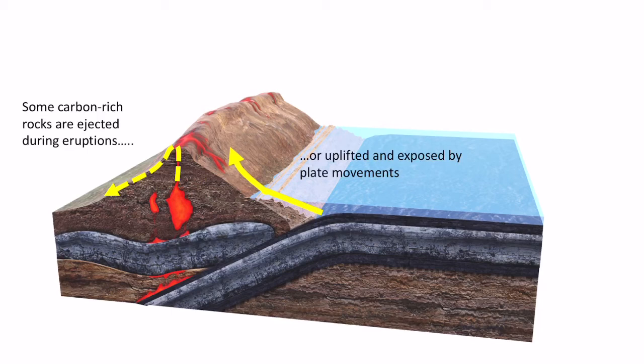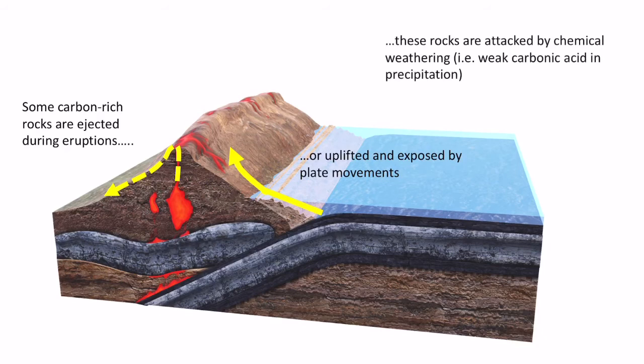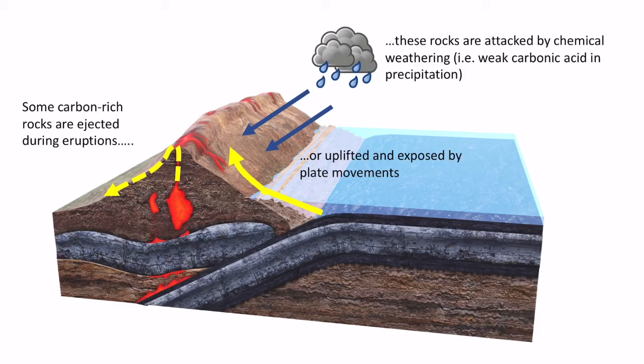And once the rocks, whether from the eruption or from the plate movement, once those rocks are exposed, they can then be attacked by chemical weathering. So we know that when carbon dioxide mixes with rainwater, it forms this weak carbonic acid and will be able to chemically weather these rocks that have been exposed.